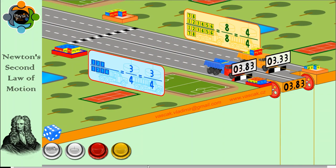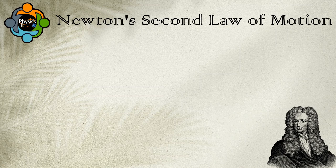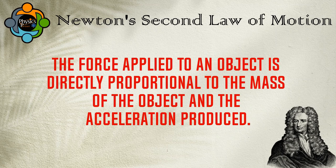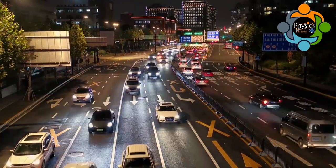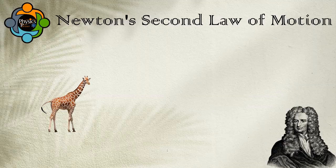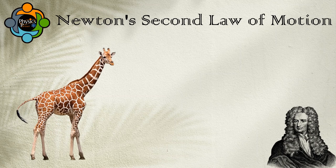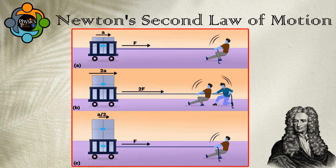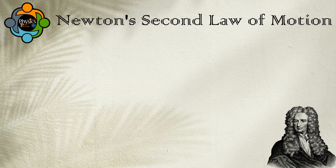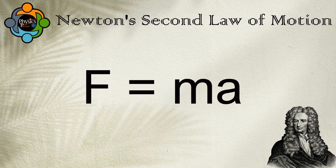Newton's Second Law of Motion states that the force applied to an object is directly proportional to the mass of the object and the acceleration produced. If you apply more force to an object it will accelerate more. If the mass of an object is greater, it will require more force to accelerate it. The formula is F = ma.